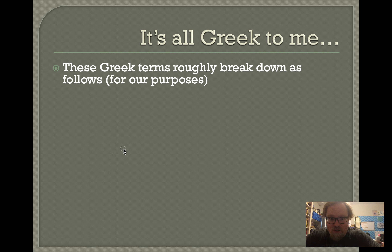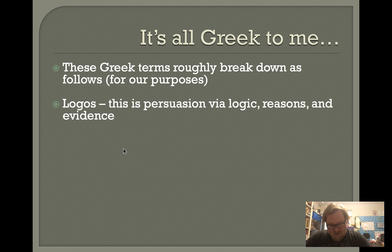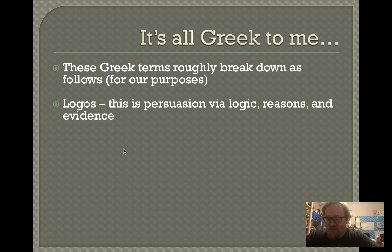Let's talk about logos. Logos is considered persuasion via logic, reasons, and evidence. That means I'm engaging with you and deploying the use of logic — providing you with actual reasoning, evidence, statistics, anything of that nature. Aristotle considered this to be the best version of appeal. Logos, when translated from the Greek, actually has many meanings: word, knowledge, and more. But here we use it to symbolize logic, reasons, and evidence. So if I'm providing someone with logic, reasons, and evidence to convince them of something, I'm engaged in a logical appeal.